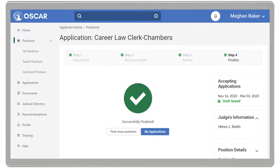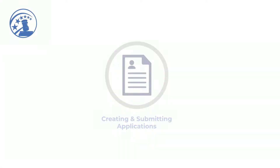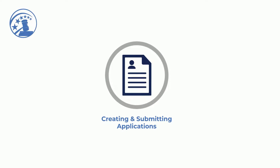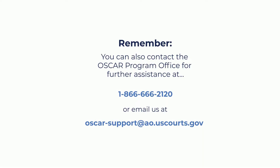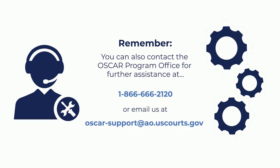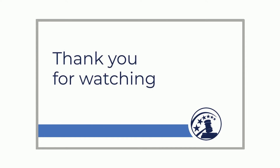This concludes our video on Applying to Positions in OSCAR. We hope you've learned more about creating and submitting applications. Visit the OSCAR training page for more videos and resources. If you need further assistance, please contact the OSCAR Program Office at 866-666-2120 or send an email to oscar-support@ao.uscourts.gov. Thank you for watching.